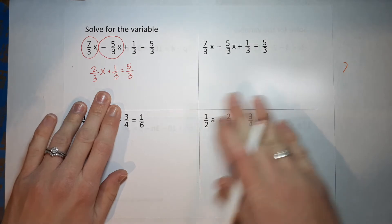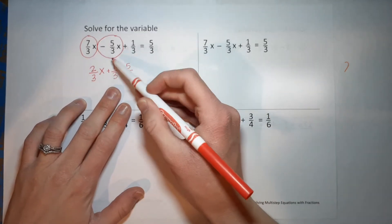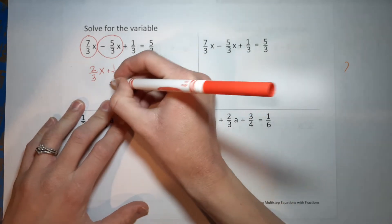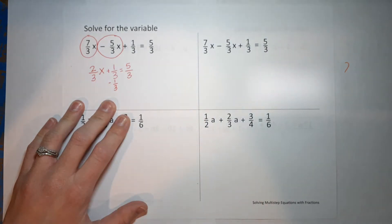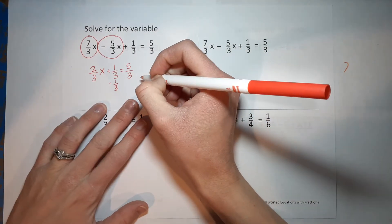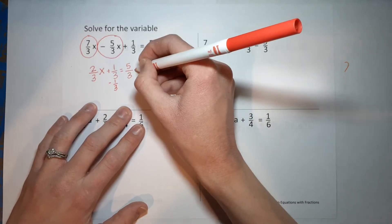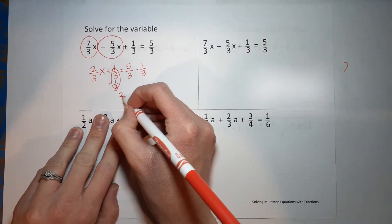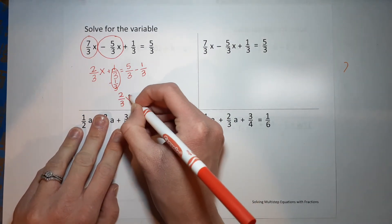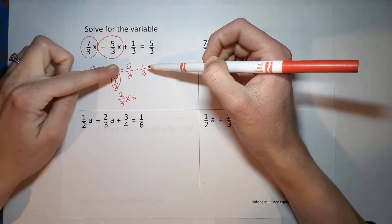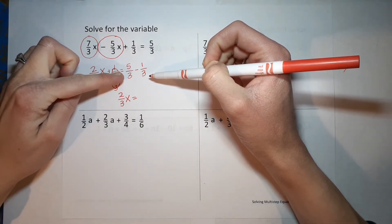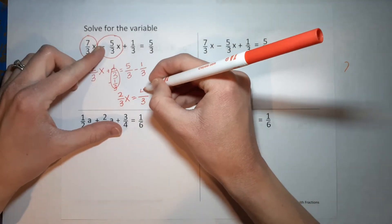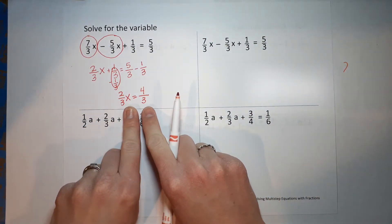There are two ways to do this. First way: I'm trying to get x alone, so I get rid of this plus 1/3 by subtracting 1/3. If I do it to this side, I must do it to this side. Those go away and I'm left with 2/3 x on this side. Remember, when we add or subtract fractions, denominators must be the same — they already are — so the denominator stays 3. Five minus one gives me 4, so I've got 2/3 x equals 4/3.